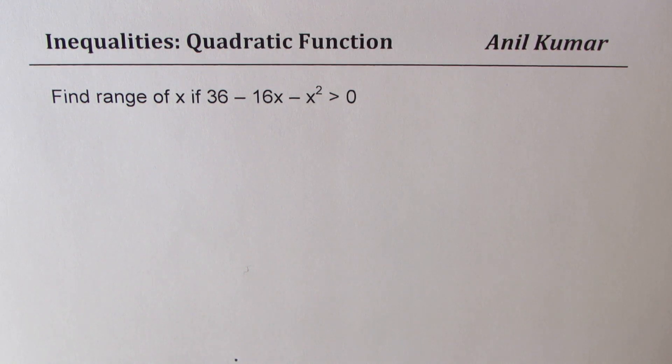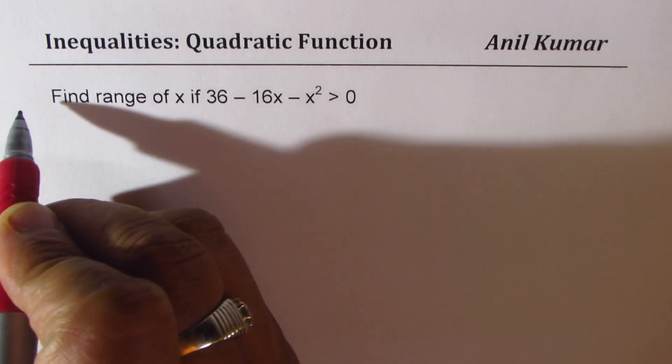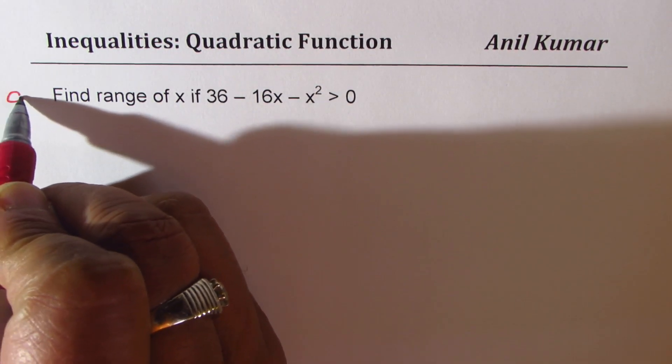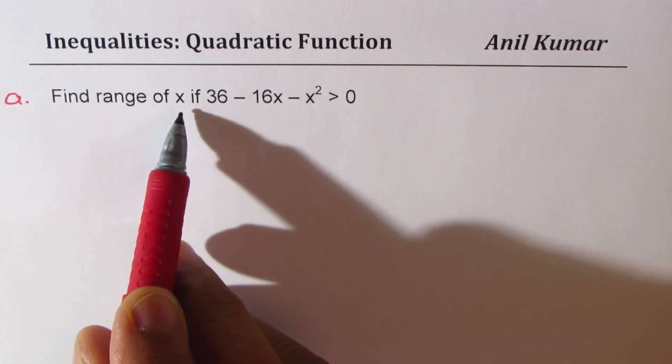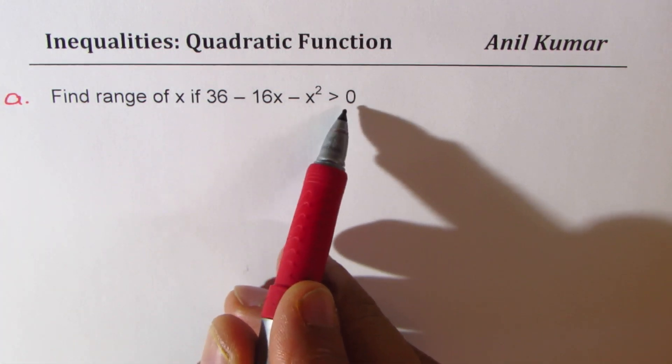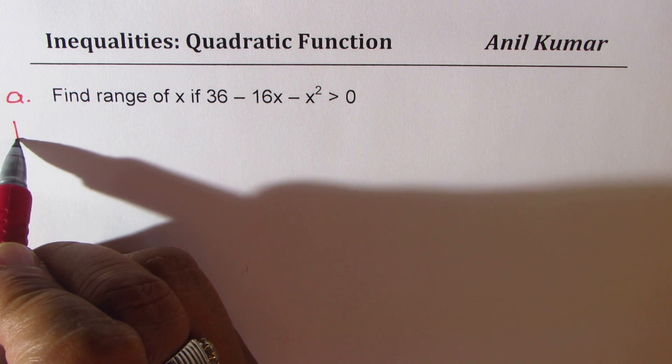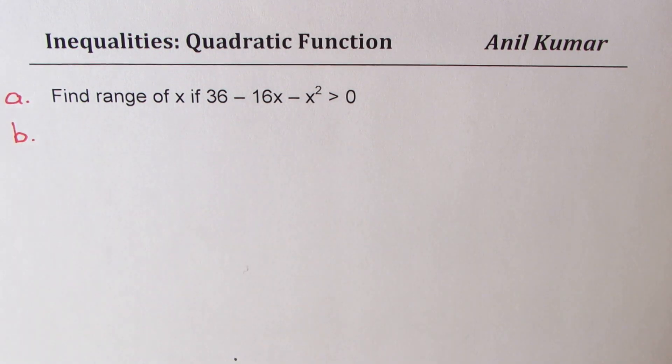Now, there could be a typing error and therefore I'm using this question in two different forms. So, I'll say part A is to find the range of x if this function is greater than 0 and then we'll also look into part B.